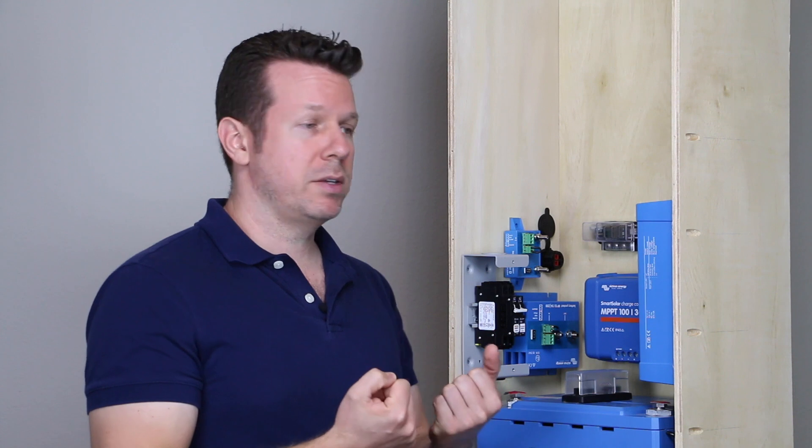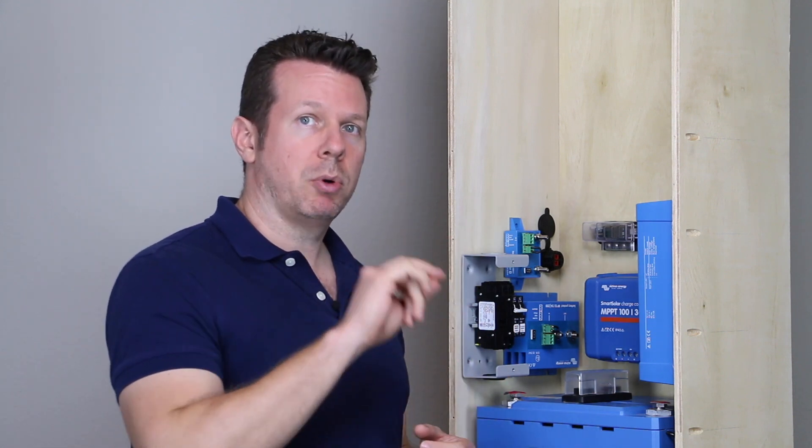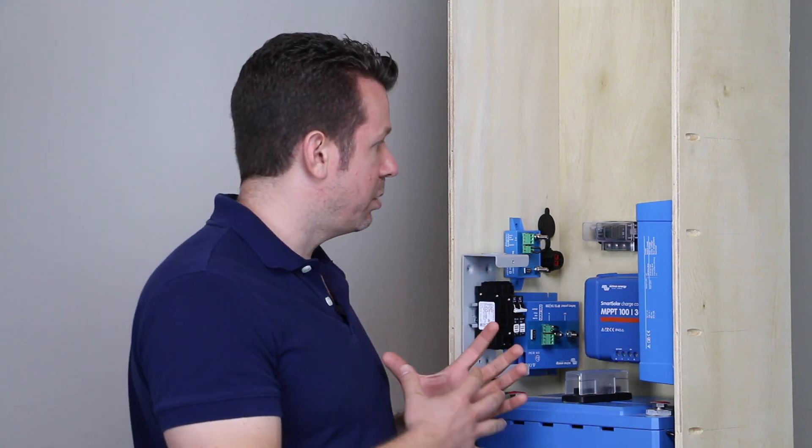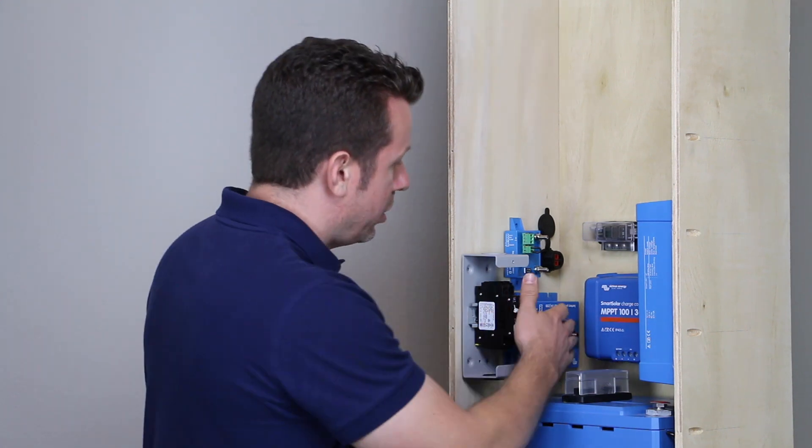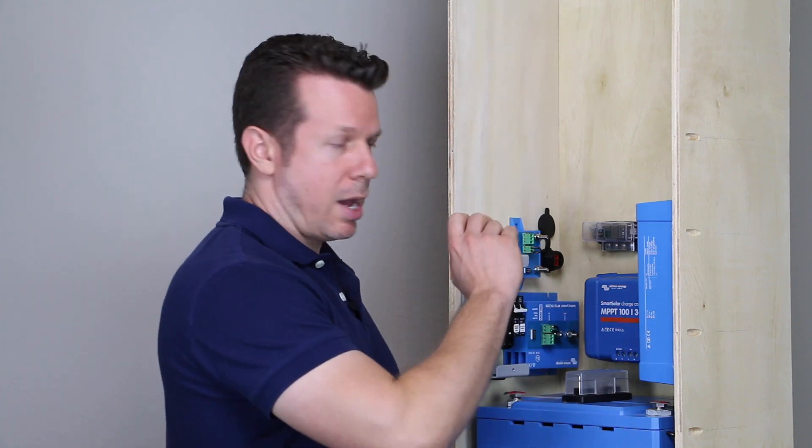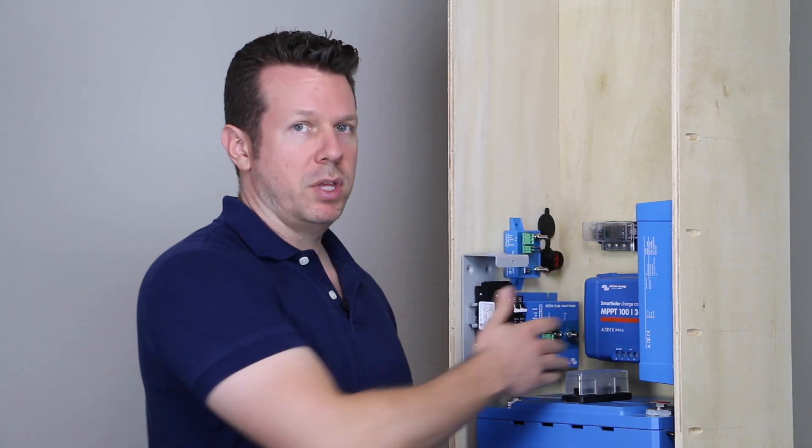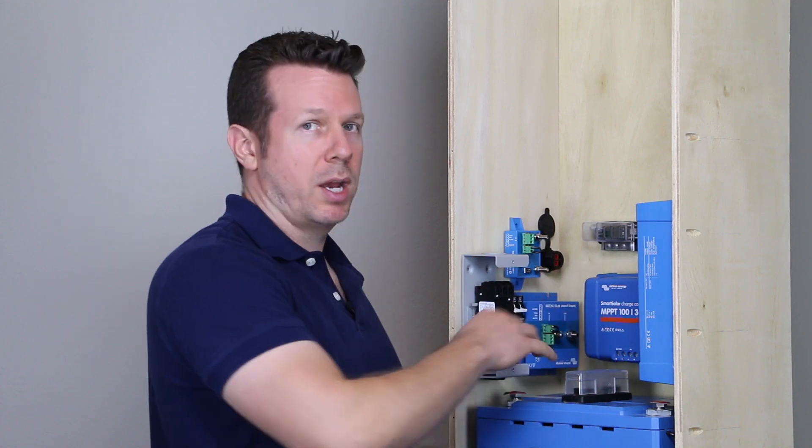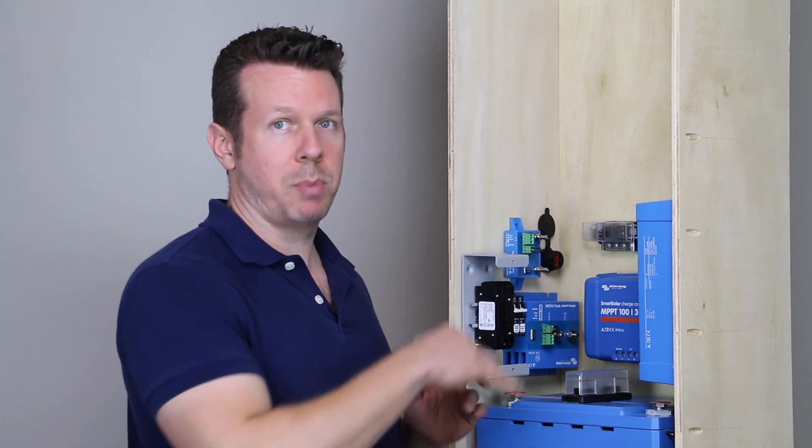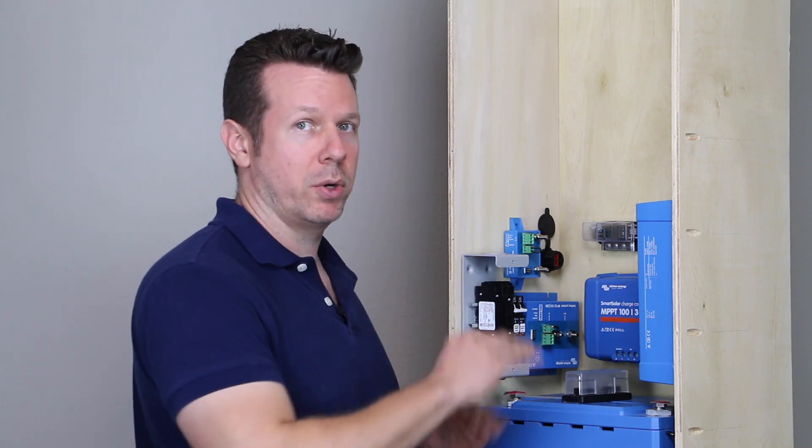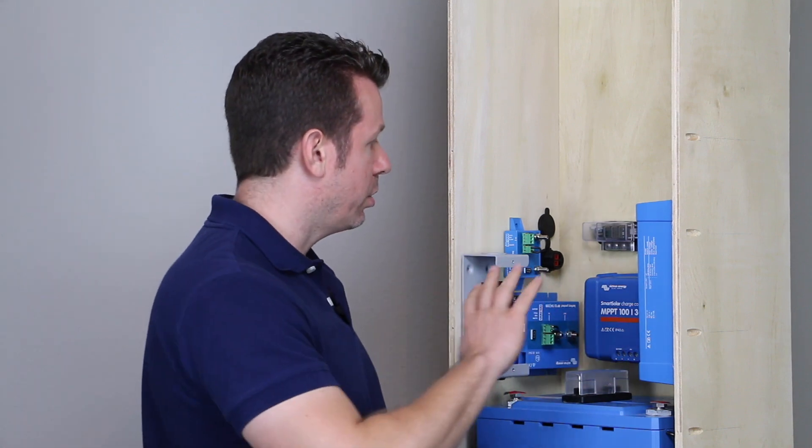So all of our positive lines are going to come into that bolt and that's going to be your red cables of various sizes. Typically, I would have a bus bar with multiple bolts, but because we're trying to save space, we're just going to go to the one bolt and we really don't have that many cables coming in, maybe three or four. It's going to be a little messier than I would typically like, but it's definitely going to work and we're going to save some space and have a very compact design.